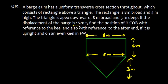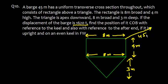The triangle is 3 meters deep. The displacement of the barge is given as 1620 tons. We need to find the position of its center of buoyancy (COB) with reference to the keel and also with reference to the after end, assuming it is upright and on an even keel in freshwater. The length is 45 meters.